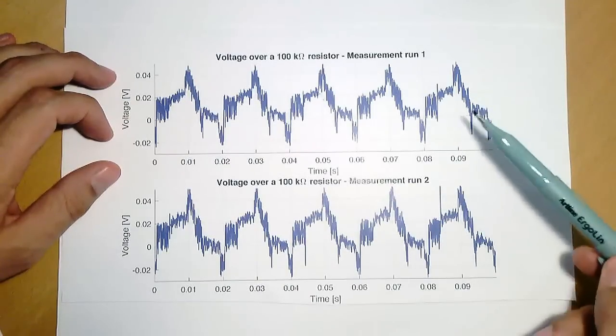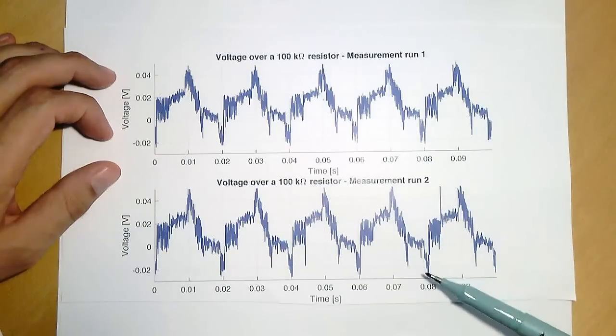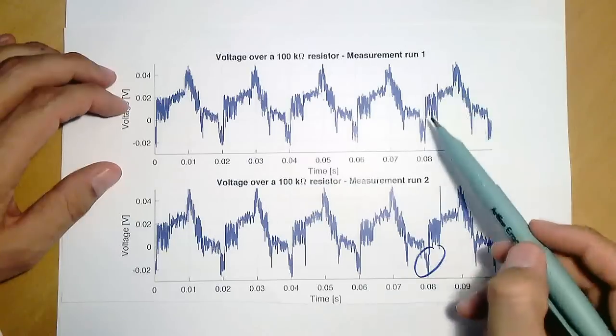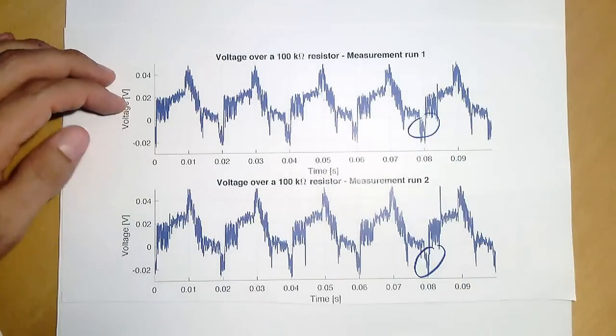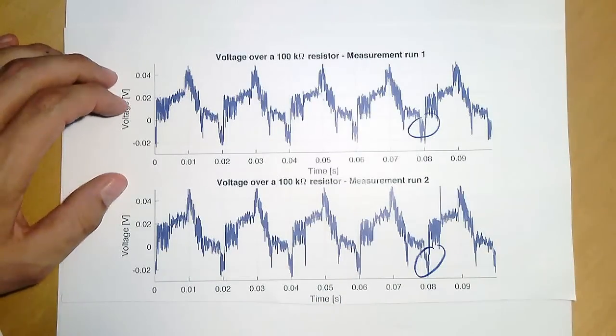It is not exactly periodic. You see here, this spike here is much less here and there are other variations. This particular part of the signal looks different from this part of the signal. So it is something that is somewhat unpredictable in some sense.